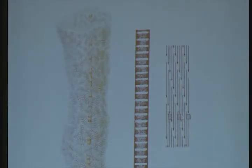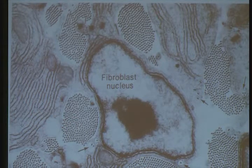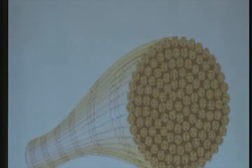If you look at collagen in the electron microscope, you see it has this banded pattern — a very distinctive characteristic. This arises because the molecules stack together offset, with little gaps between the ends of the molecules, creating this banded pattern that shows up when you stain it for the electron microscope. Here's a cross-section where you can see the collagen bundles, collagen fibers coming out toward you, cut in cross-section, with a fibroblast cell that makes the connective tissue.